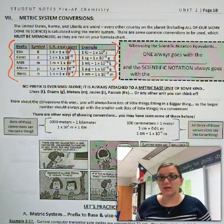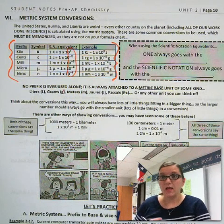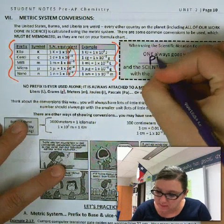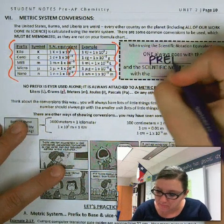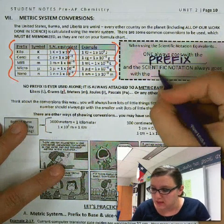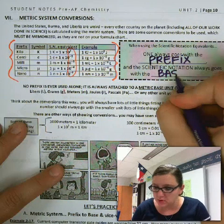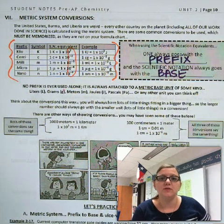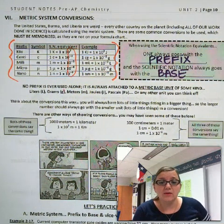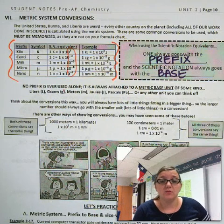Now, as you're using the scientific notation equivalents in a conversion, one will always go with the prefix. And the scientific notation equivalent will always go with our base unit. Now your base unit could be a multitude of things, like I've already mentioned, it could be liters, grams, joules, whatever the case may be. But these enable us to make those conversions.